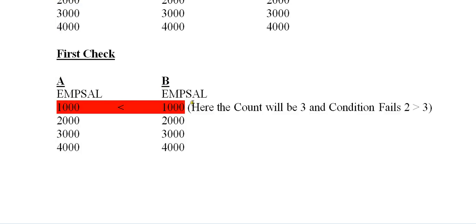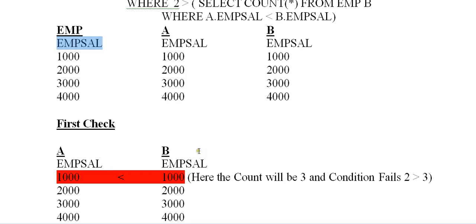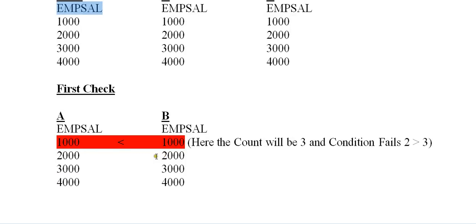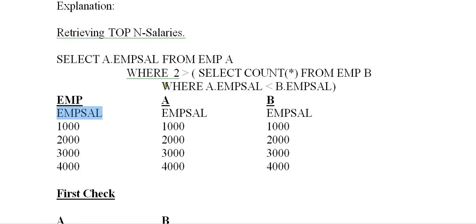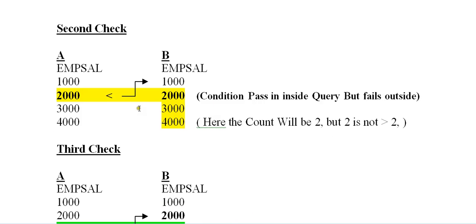First check: is 1000 less than 1000? No. How many records in B are less than 1000? The count is zero — so 2 is not greater than zero, the condition is false. Second check: select 2000 from alias A and check all conditions.